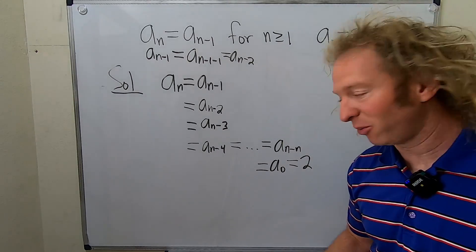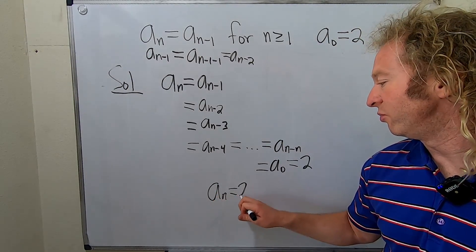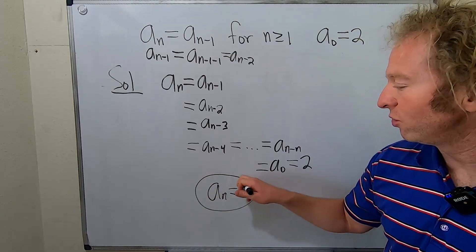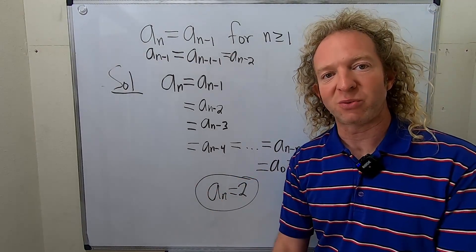And so that's it. A sub n is equal to two. That would be the answer to the problem, to the recurrence relation.